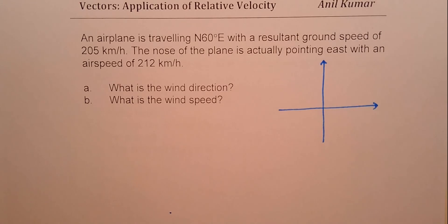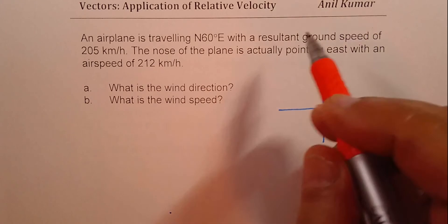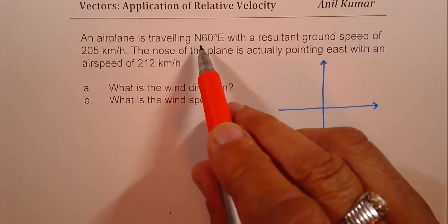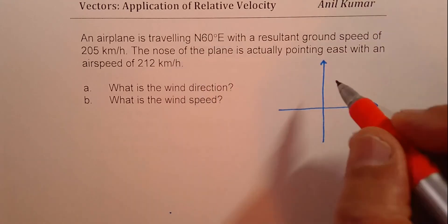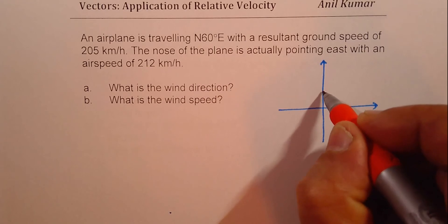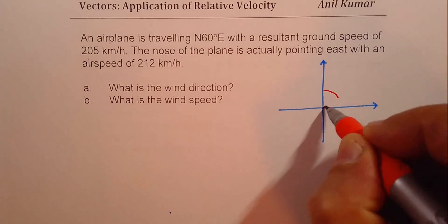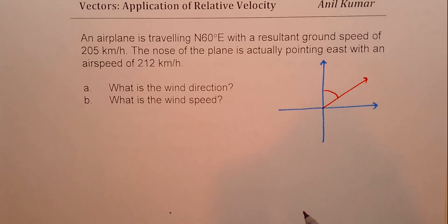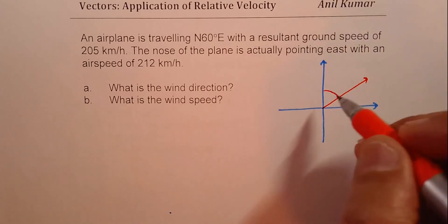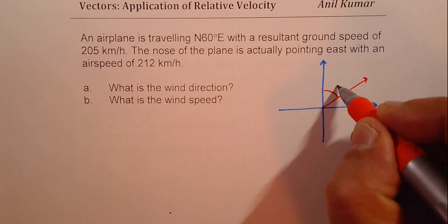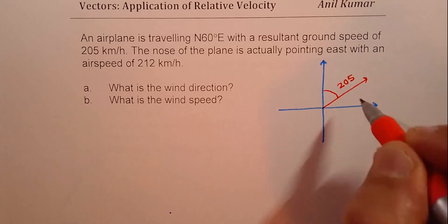What we are given here is that the resultant speed is 60 degrees east of north. That means 60 degrees east of north is the resultant speed. Let us say this is the resultant speed. And this speed is given to us as 205 units or kilometers per hour.